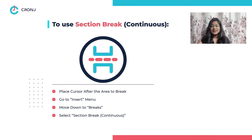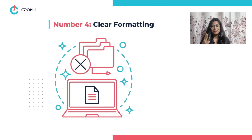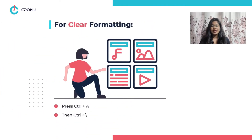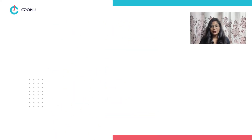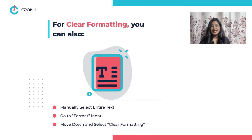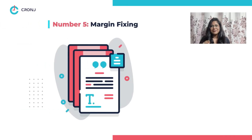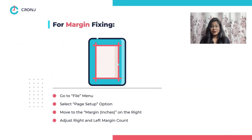In Breaks, select Section Breaks Continuous. Number four: clear formatting. You can also clear the formatting of your document to reduce pages. For that, press Ctrl+A and then press Ctrl+backslash, or you can manually select the entire document text using your cursor and then go to the Format option, under which you need to select Clear Formatting.